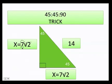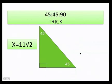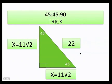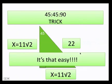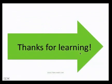If you ever forget the ratios, you can always use Pythagoras to solve it. For example, if both legs are 11√2, the hypotenuse is 22. It's just that easy. I hope you enjoyed this lesson and we'll see you soon. Thanks so much for learning!